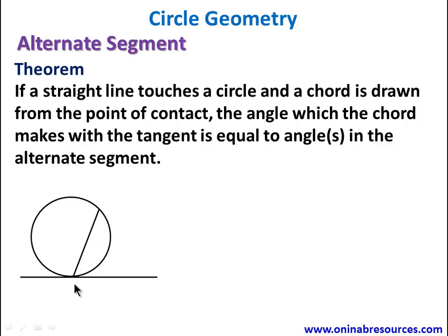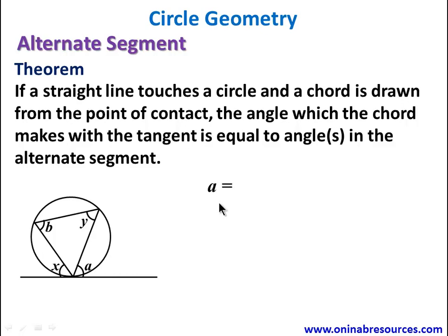The angle this chord makes with the tangent — call it A — is equal to the angle in the alternate segment. In both cases, A equals B, and X equals Y. This is the diagrammatic explanation of the alternate segment theorem.